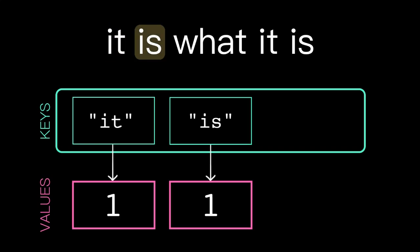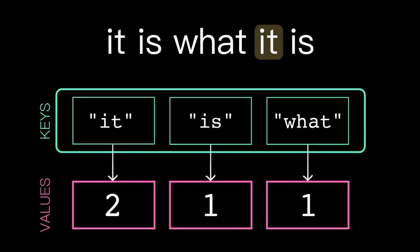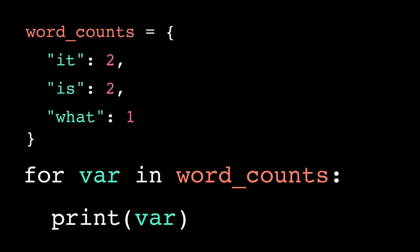How do we iterate over the items in a dictionary? There's no indices like in lists, so we can't use for i in range. But we can use a for each loop.